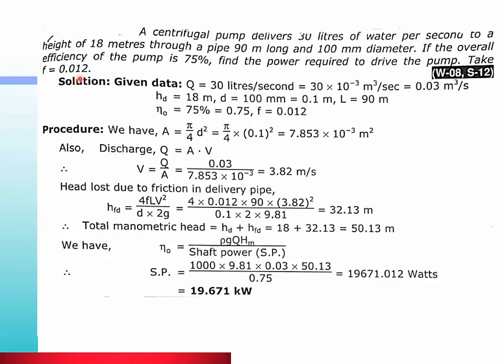Given data: Q = 30 liters/second = 30 × 10⁻³ m³/sec = 0.03 m³/s, Hₘ = 18m, L = 90m, D = 100mm = 0.1m, ηₒ = 75% = 0.75, f = 0.012. First we find velocity V = Q/A. Area A = π/4 × d² = π/4 × (0.1)² = 7.853 × 10⁻³ m². So V = 0.03/(7.853 × 10⁻³) = 3.82 m/s.